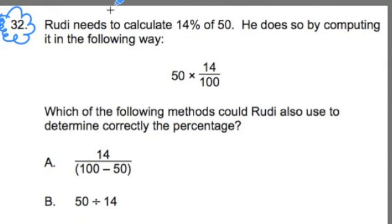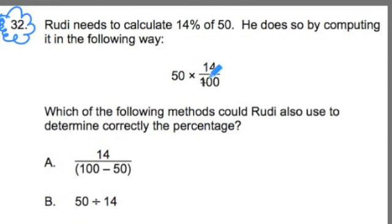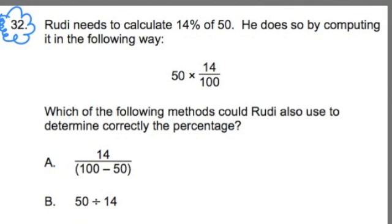Rudy needs to calculate 14% of 50. He does so by computing it in the following way: 50 times 14 over 100. Which of the following methods could Rudy also use to determine correctly the percentage? We have some options here.